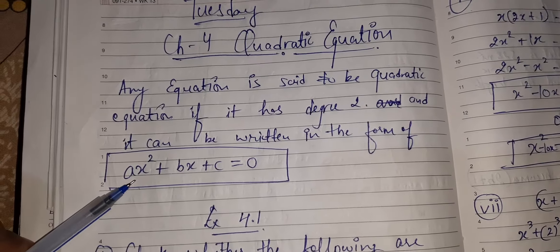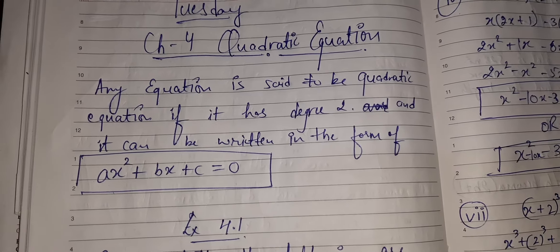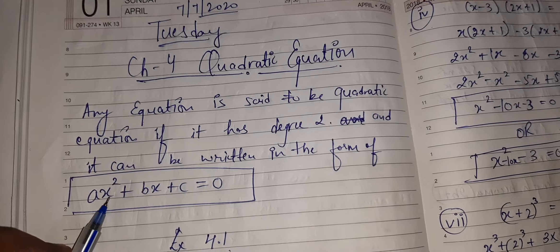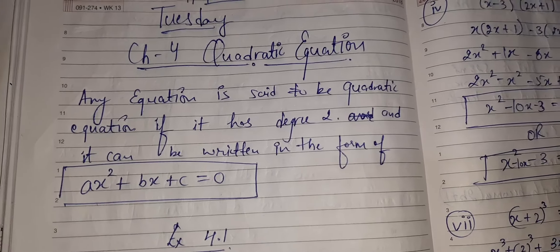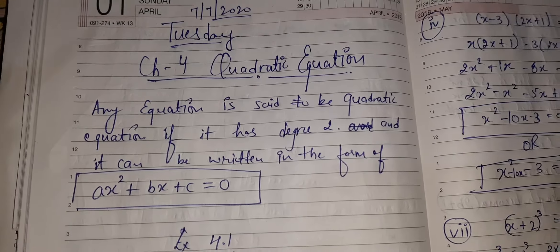But all that matters is the X squared term. It should not be X cubed, it should be X squared only. If it is single X, then also it cannot be a quadratic equation. This X squared term needs to be there.